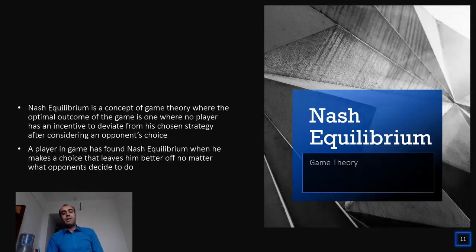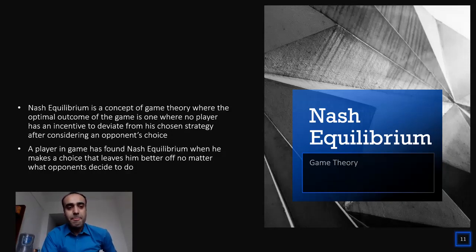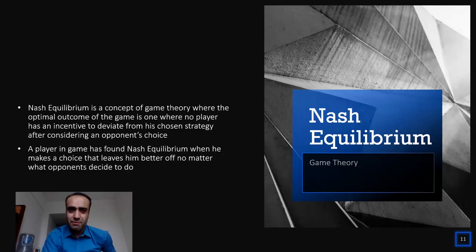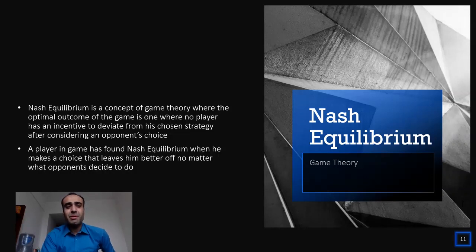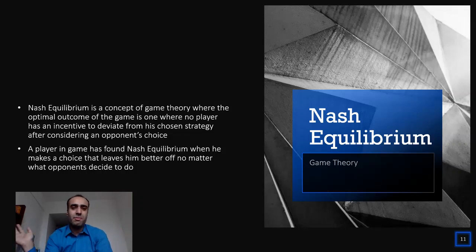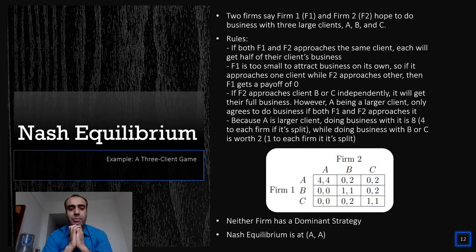Nash equilibrium is a concept of game theory where the optimal outcome of the game is one where no player has an incentive to deviate from their chosen strategy after considering an opponent's choice. In simple words, a player in a game has found a Nash equilibrium when they make a choice that leaves them better off no matter what the opponent decides to do.